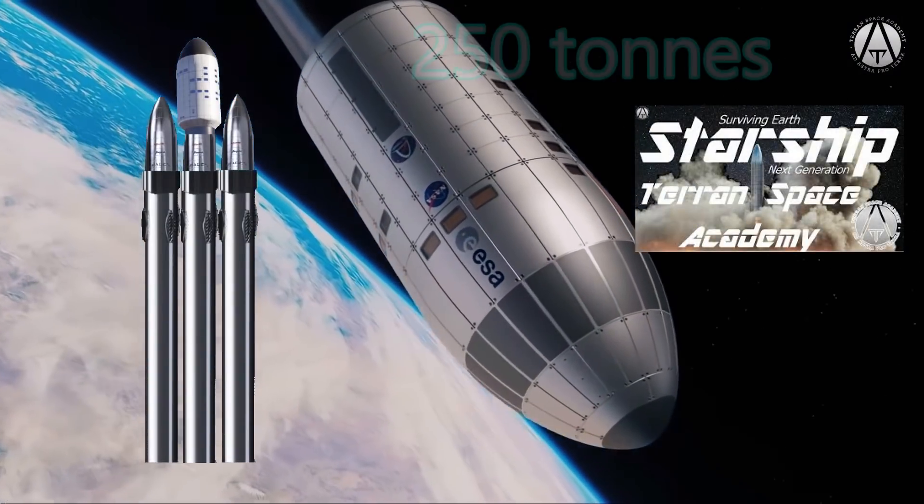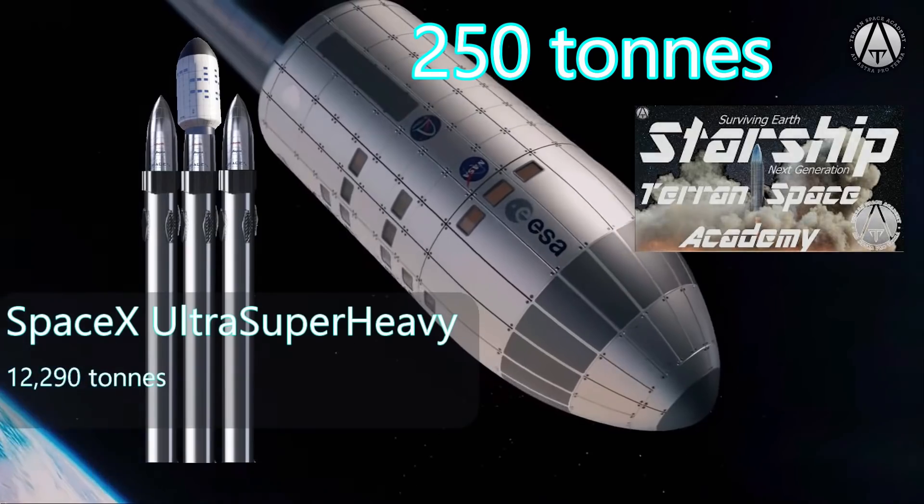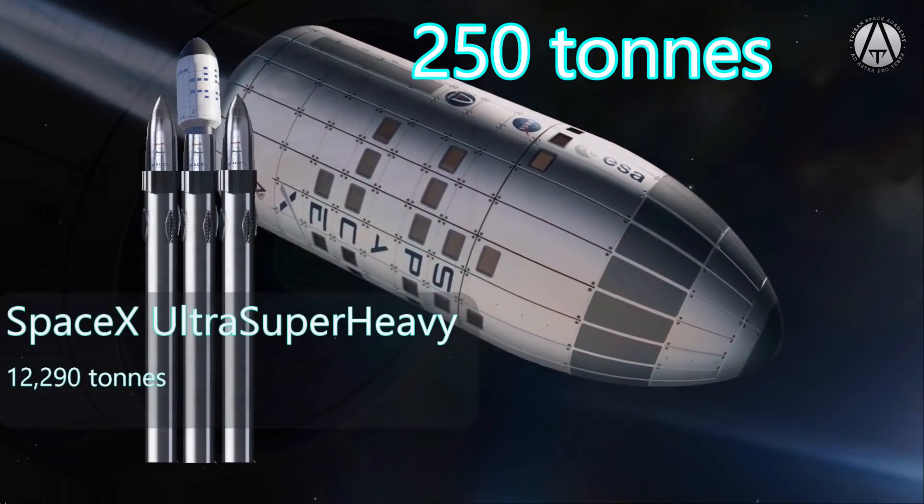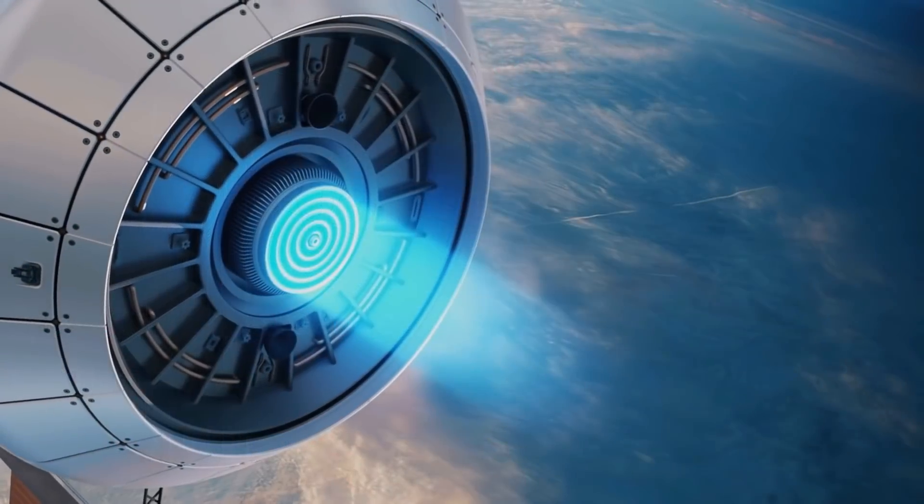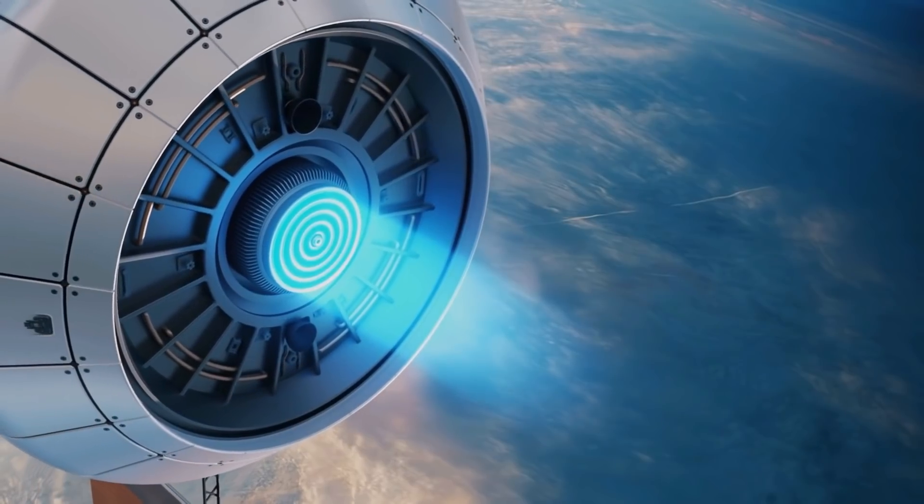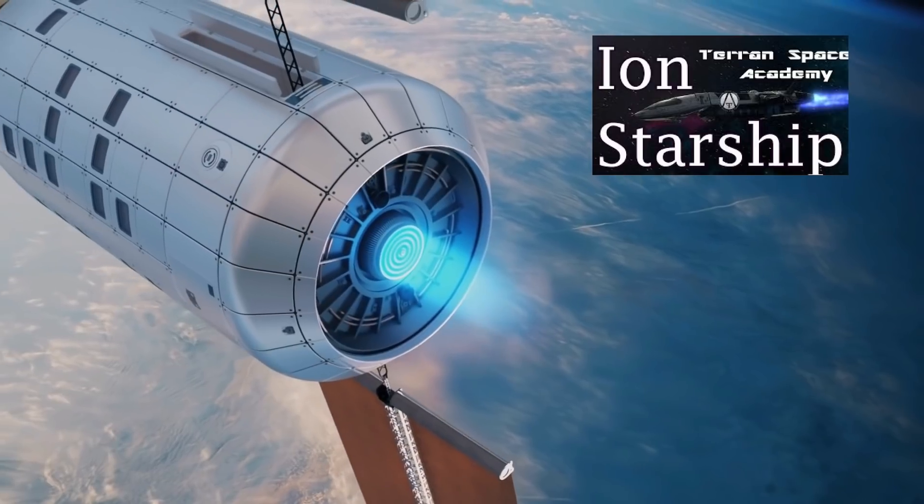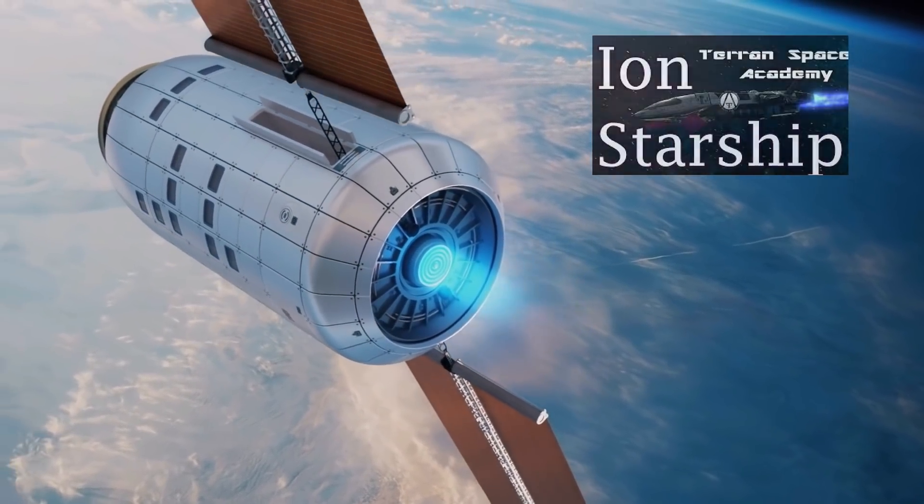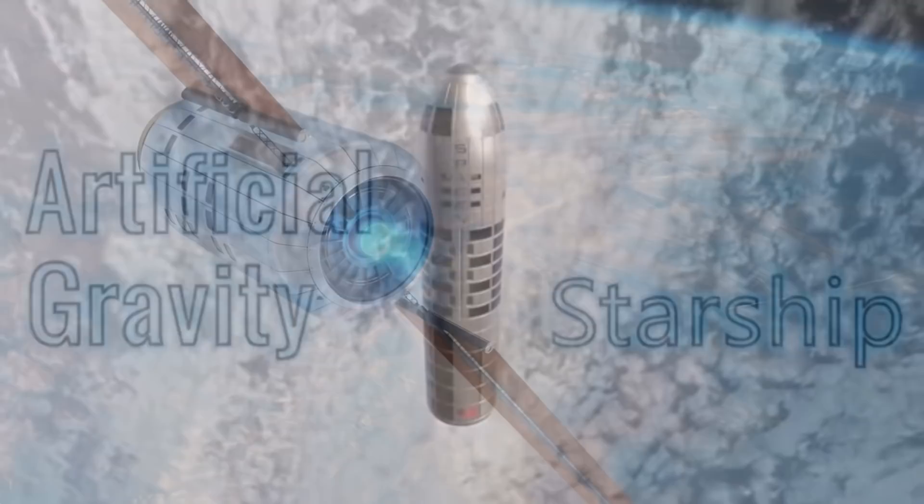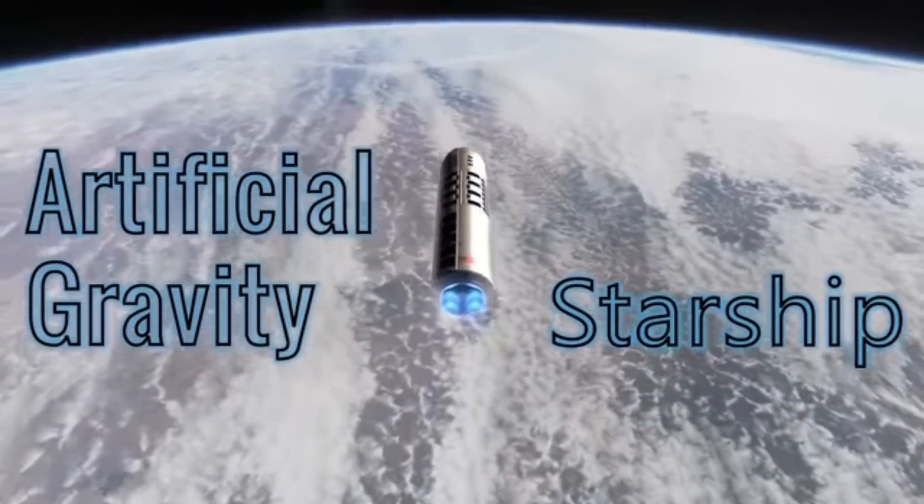This design has a mass of 250 tons, and its initial design was for it to have one large hall effect thruster. This would work fine for station keeping in Earth or lunar orbit, but would not get us to Mars in a very quick fashion. The ship is 13 meters in diameter and has been updated with more powerful Raptor Vacuum engines seen here.